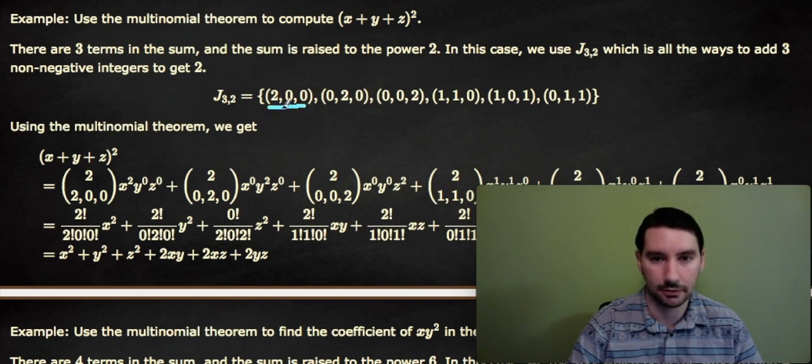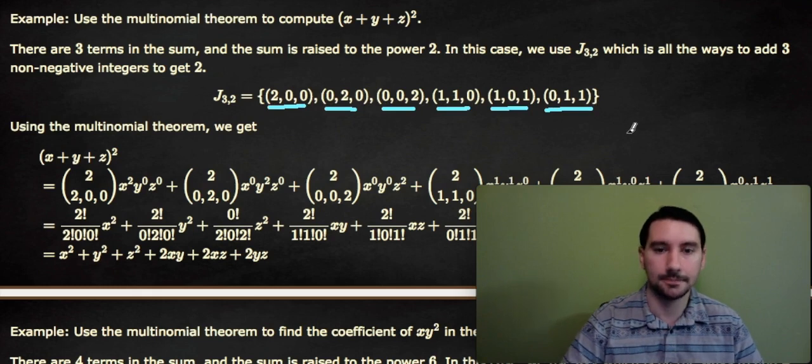So for example, we have (2,0,0), which adds to 2, (0,2,0), (0,0,2). And then we could do like a (1,1,0), which adds to 2, (1,0,1), and (0,1,1). So it's just all the ways to add to 2 with tuples of size 3.